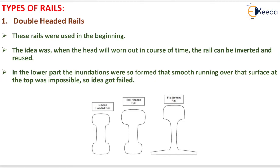Types of rail — the first one is the double headed rail. These rails were used in the beginning. The idea was that when the head worn out in course of time, the rail could be inverted and reused. However, in the lower part, the indentations were so formed that smooth running over that surface at the top was impossible, so the idea failed.